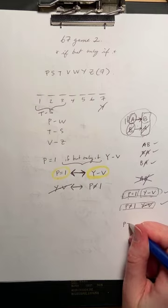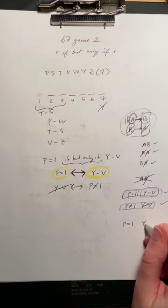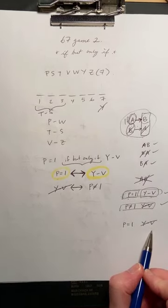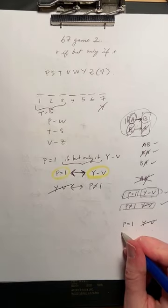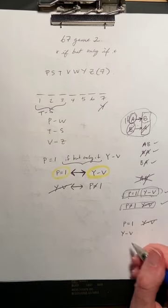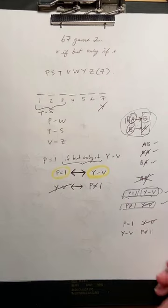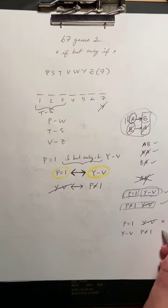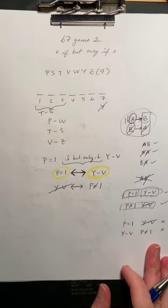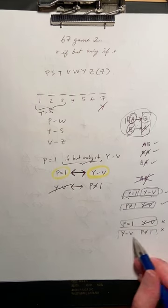What we can't have is we can't have P being first and Y not being before V. We also can't have Y being before V and P not being first. So these would be unacceptable combinations of information here.